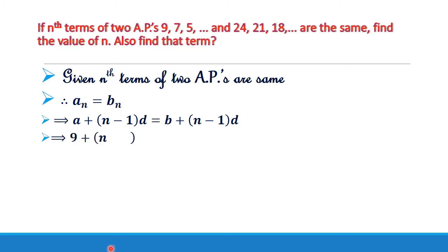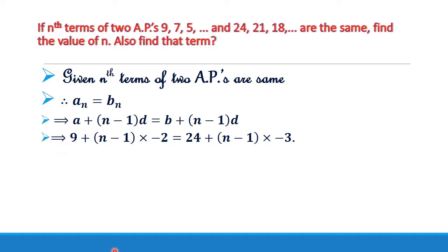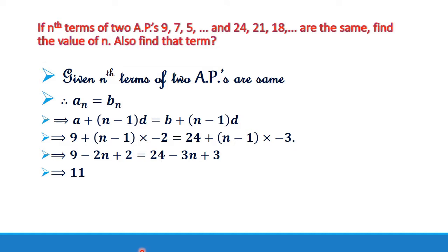Substituting the values: 9 + (N−1)×(−2) = 24 + (N−1)×(−3). The first AP has first term 9 and common difference −2; the second AP has first term 24 and common difference −3. Simplifying: 9 − 2N + 2 = 24 − 3N + 3, which gives 11 − 2N = 27 − 3N.